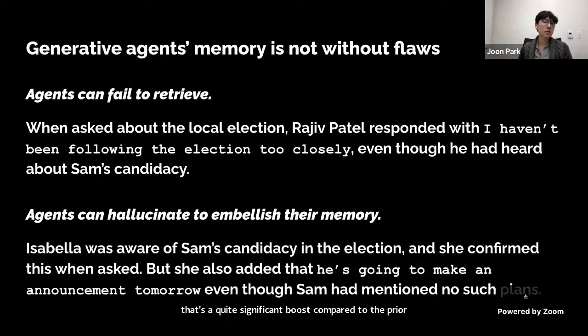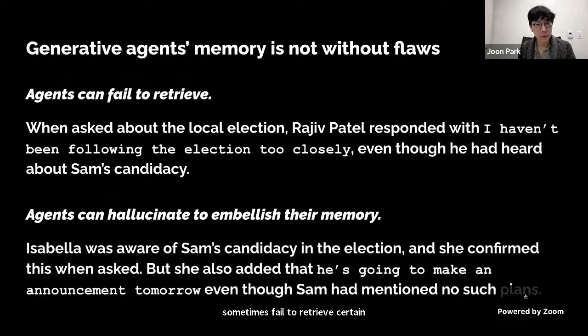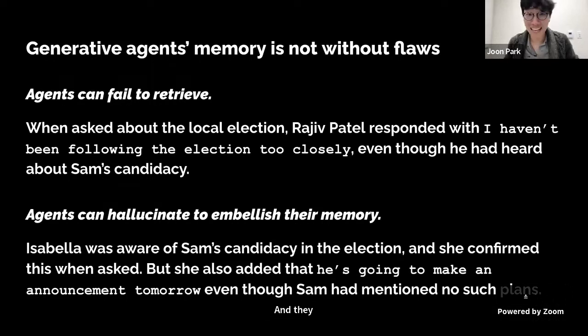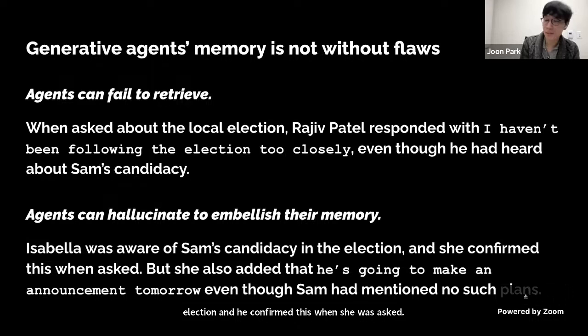Of course, our agents were not without flaws. They would sometimes fail to retrieve certain memories — for instance, Rajiv answered 'I haven't been following the election too closely' even though he had talked to Sam about his candidacy. They would also sometimes embellish memory: Isabella was aware of Sam's candidacy and confirmed it when asked, but she also added that he's going to make an announcement tomorrow even though Sam had mentioned no such plans.